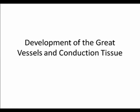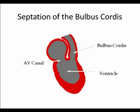We're going to continue our discussion on the development of the cardiovascular system with a focus on the great vessels and the conduction tissues of the heart. We'll start by looking at the bulbous cordis and in particular the more cephalic region, the truncus arteriosus, which is going to septate and divide into the pulmonary artery and the aorta.